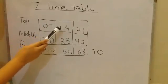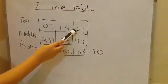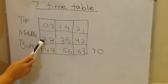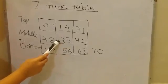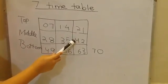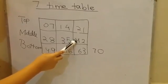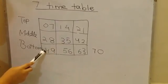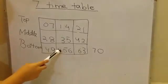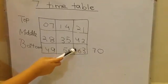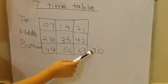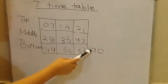The completed grid shows the 7 times table: 1 times 7 is 7, 2 times 7 is 14, 3 times 7 is 21, and so on through the pattern.